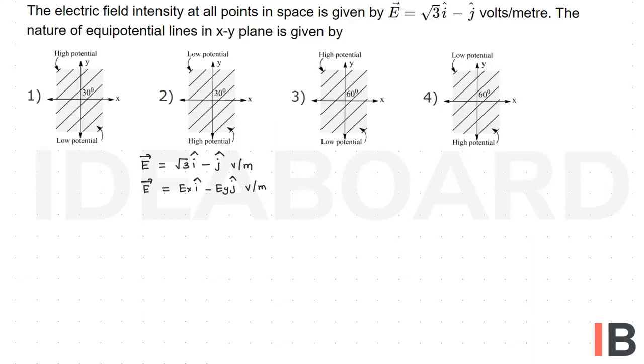Take tan theta equals Ey by Ex, that is minus 1 by root 3, which is equal to 30 degrees.